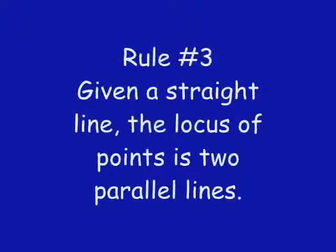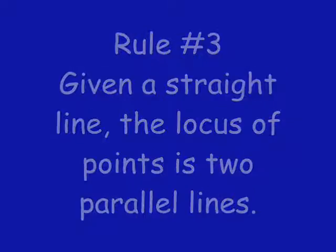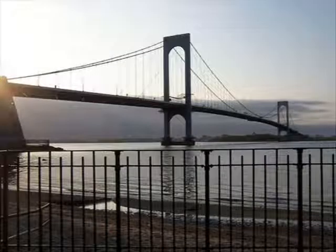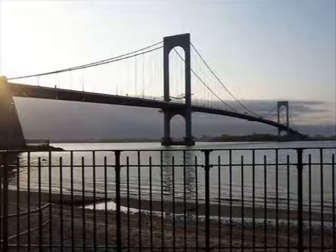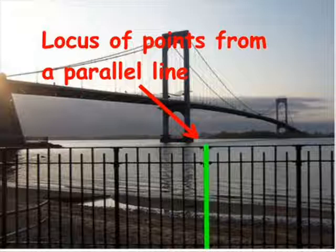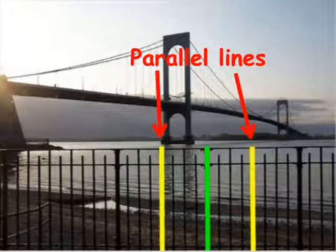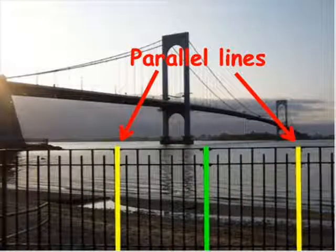Rule number three: given a straight line, the locus of points is two parallel lines. This rule is illustrated using a fence. The design or pattern shows that if you pick any bar on the fence, the locus of points can be shown to be two or more parallel lines. This locus rule is necessary to bring stability in the construction of the fence.